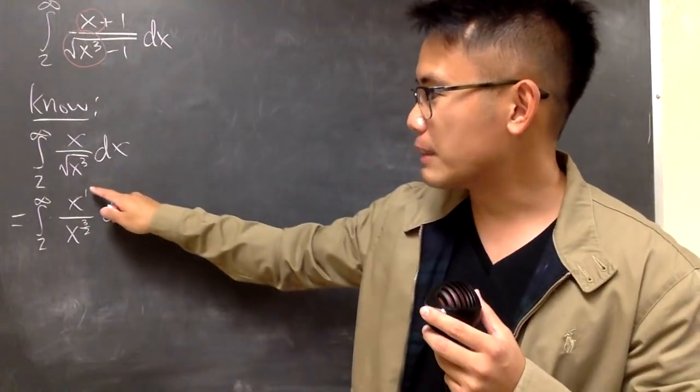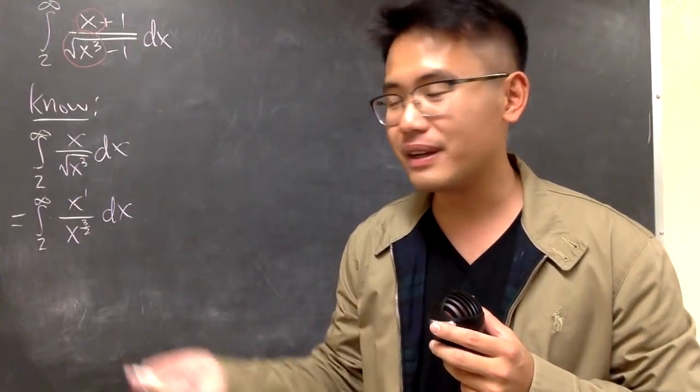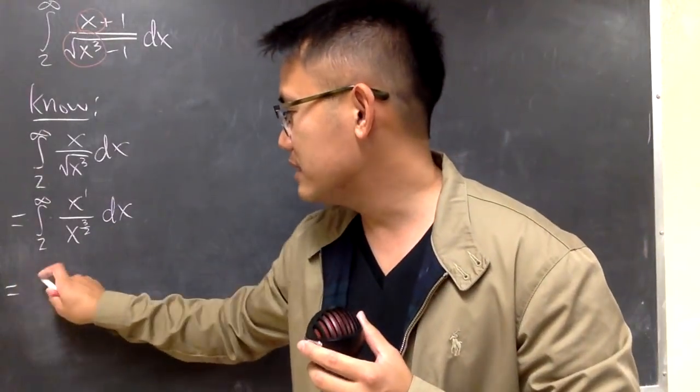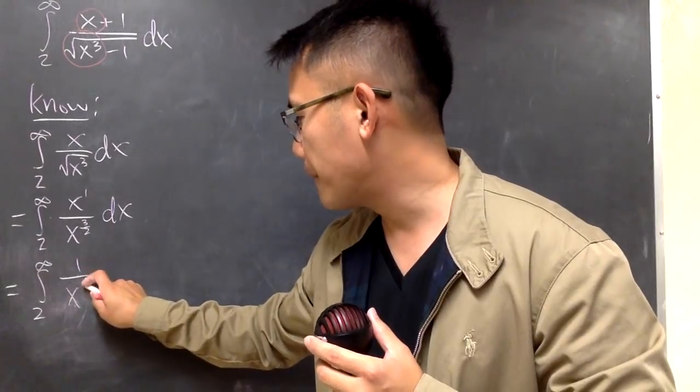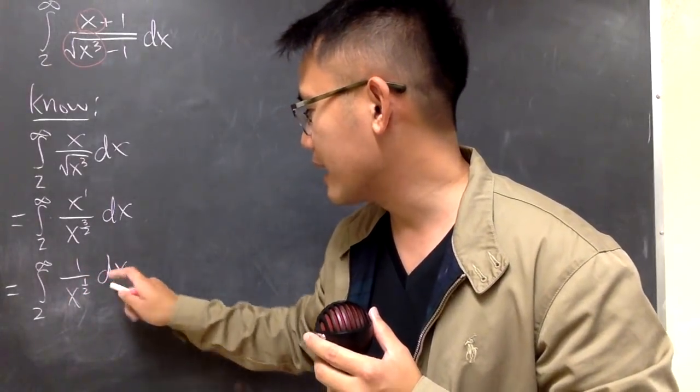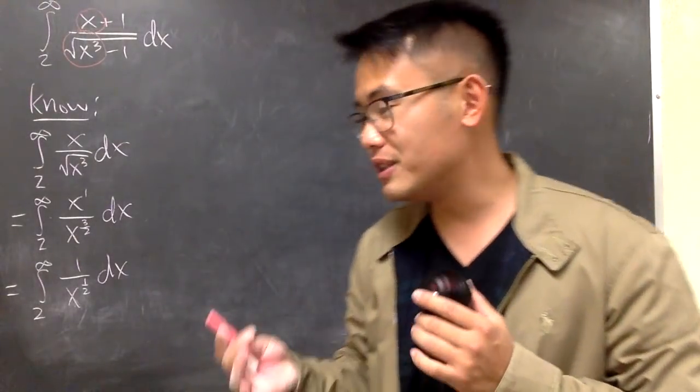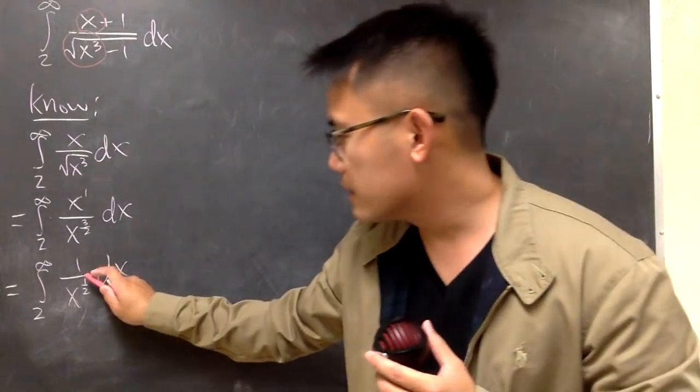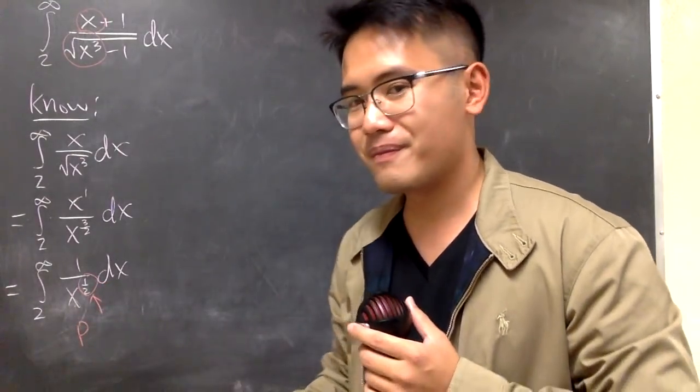When we subtract the power, 1 minus 3 half, we get negative 1 half. That means we can have this as the integral from 2 to infinity, 1 over x to the positive 1 half power, like that. When you have this, you will actually know about this, because this right here is the p.